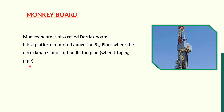What the derrickman does is stand on the monkey board. At the time of pulling out of hole, he takes the drill pipe stand from the elevator and places it in the fingers. At the time of running in hole, he does the opposite — he takes the stand from the fingers and attaches it to the elevator so it can be sent down into the well.